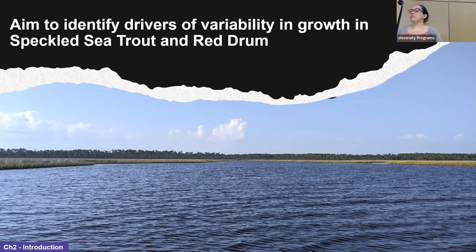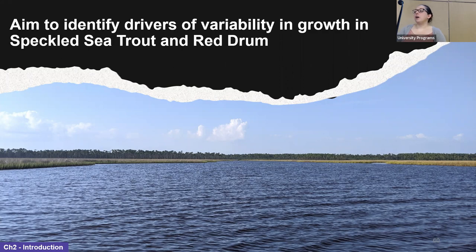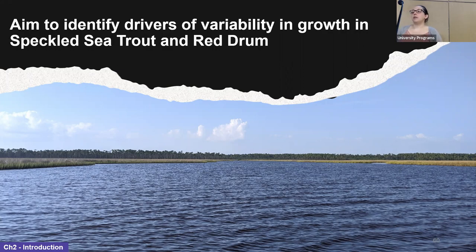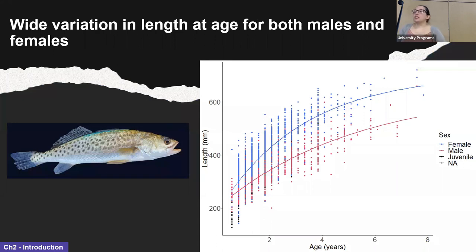Chapter two is entitled Drivers of Cenosean Nebulosis and Cyanops Oscillatus Growth — that's speckled trout and red drum, respectively. This chapter is focused on the variation we see in size at age for speckled sea trout and red drum. For each species at each age and sex, the fish can be very different lengths. The goal is to identify drivers of variation in growth rates, which is important because growth rates affect early survival of these fish as well as how soon they enter the minimum slot size — the minimum length an angler is allowed to keep.